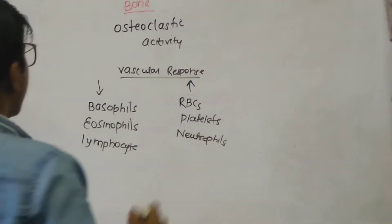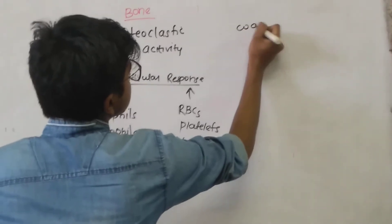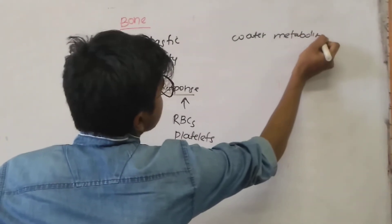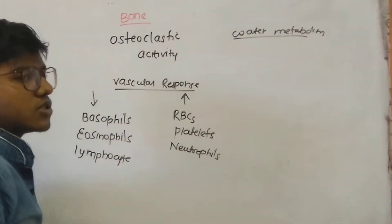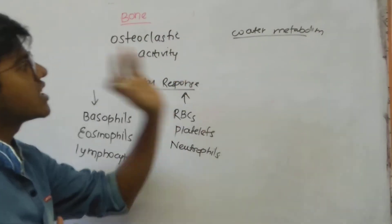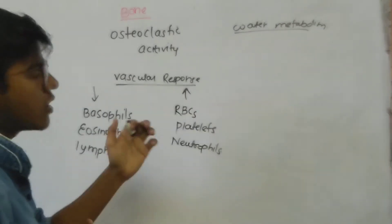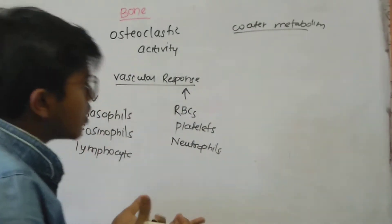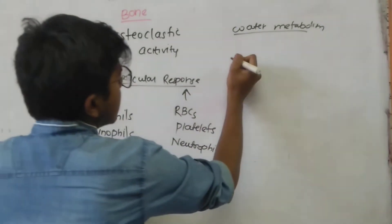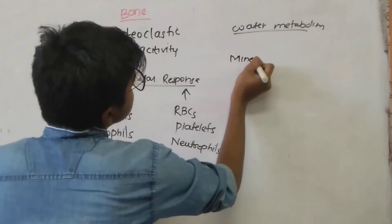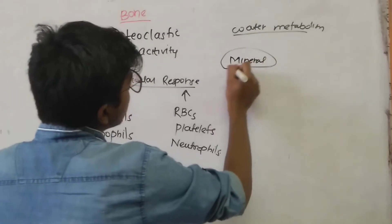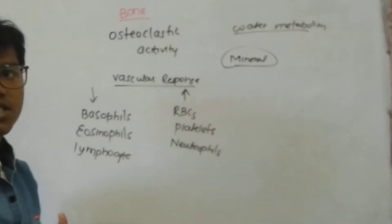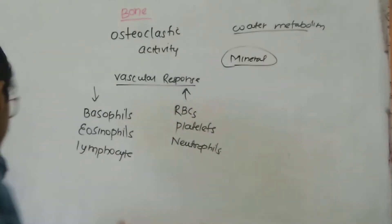On water metabolism, glucocorticoids tend to accelerate water excretion. Whenever there is a deficiency of glucocorticoids, excess water accumulation occurs in the body and may lead to water intoxication. On mineral actions, glucocorticoids have the same effect as mineralocorticoids — they cause sodium retention and increased potassium excretion.